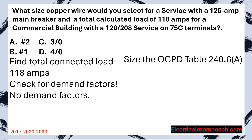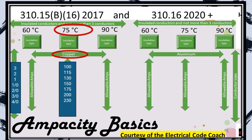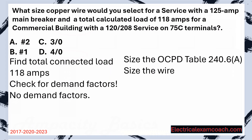Normally, we would size our overcurrent protective device, but if you notice in the question, they've already done that for us. So all we have to do is size our wire. We're going to head to our primary ampacity table and find a wire that is good for 118 amps. We slide down the 75 degrees C column on the copper side, and we're going to find that we select a number one. First size the breaker based off the known load, and then you're going to size the wire. It really is that simple.